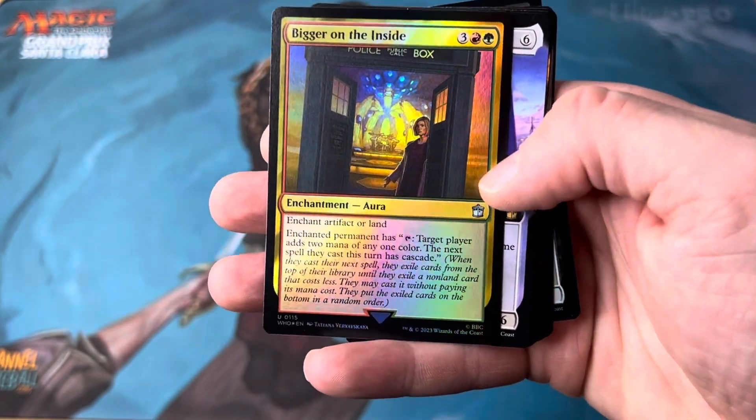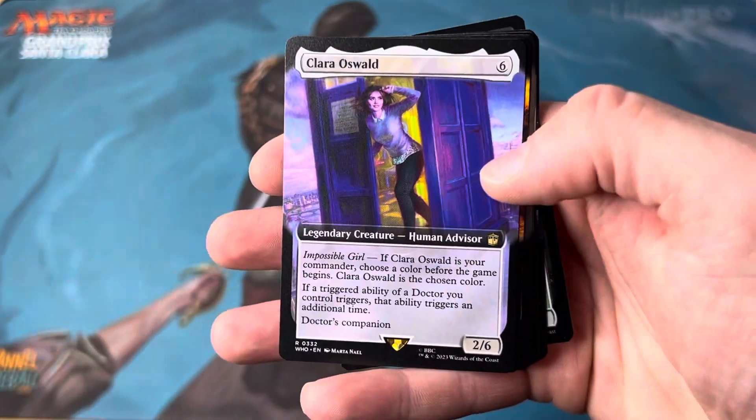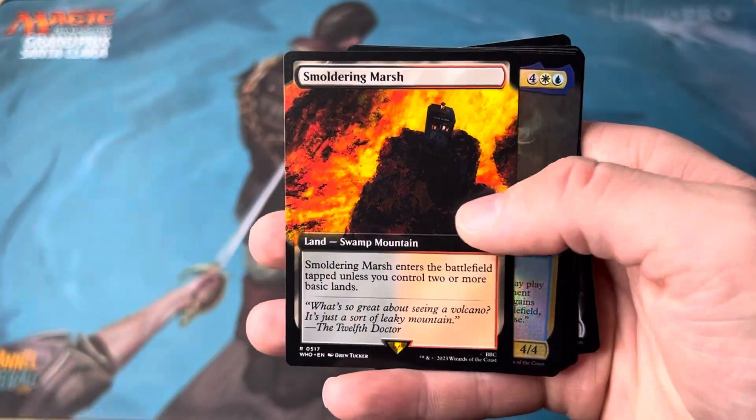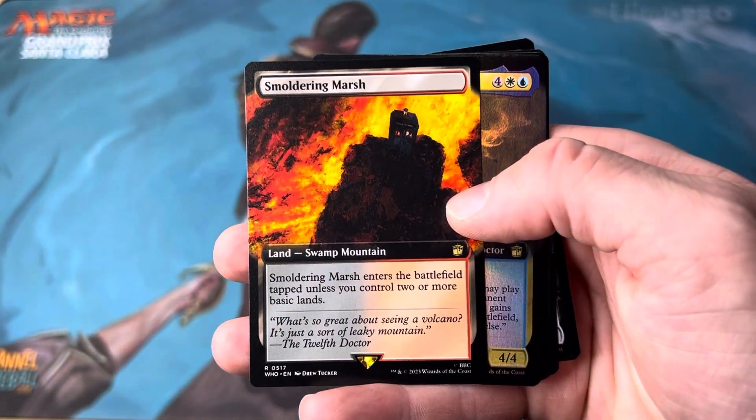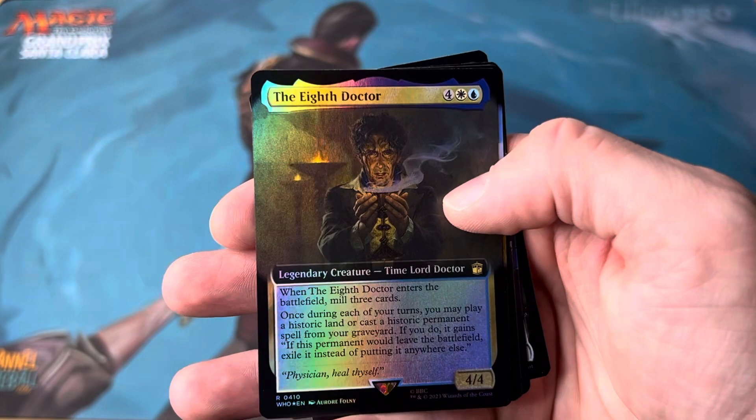Bigger on the inside. Very cool. Make your own joke. Clara Oswald. Fantastic. Smoldering Marsh. Fantastic.